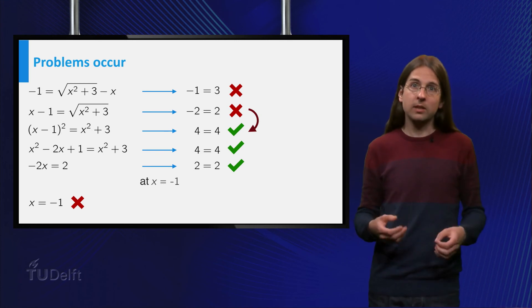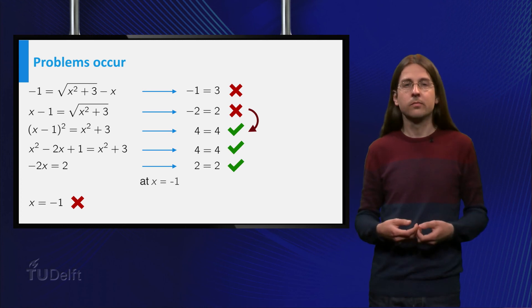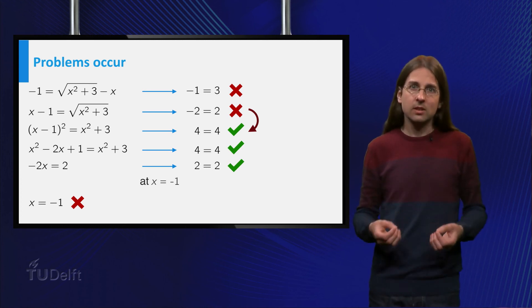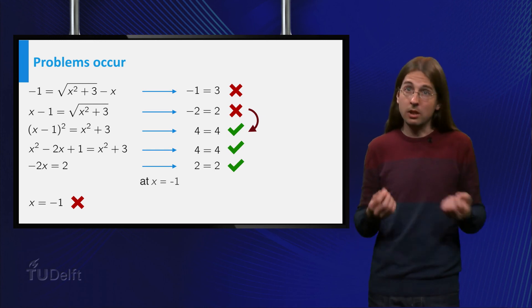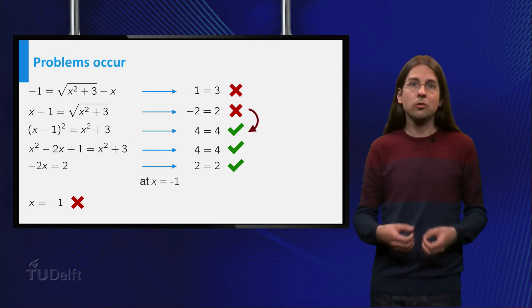Before squaring the equation said minus 2 equals 2 and after squaring 4 equals 4. More generally, if the two numbers x minus 1 and square root of x squared plus 3 are equal, then their squares are also equal.